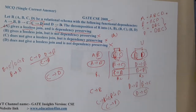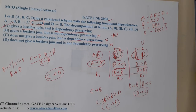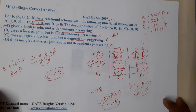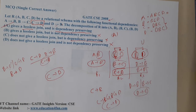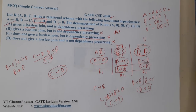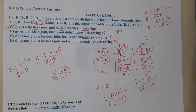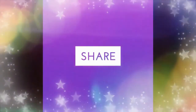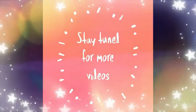So we can conclude this decomposition is lossless. Most probably A is the correct answer, since the decomposition is both dependency preserving and lossless. I hope everyone got a clear idea. Let us meet in the next lecture. Thank you, like share and subscribe for more videos.